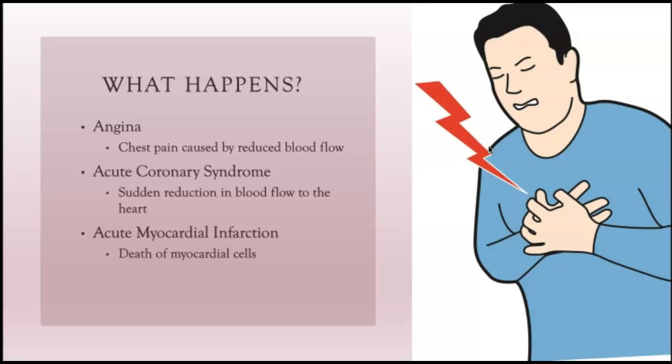Acute coronary syndrome is a sudden reduction in blood flow to the heart. Acute myocardial infarction may be preceded by acute coronary syndrome, but a myocardial infarction is prolonged ischemia — that prolonged lack of blood and oxygen to the tissue that results in irreversible damage, caused by a complete blockage to an artery or an area of the heart muscle.